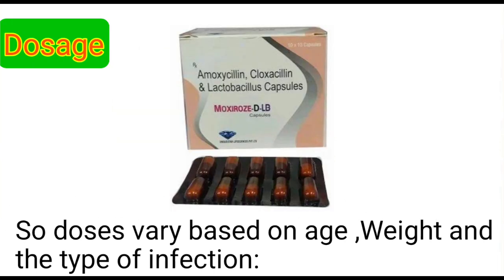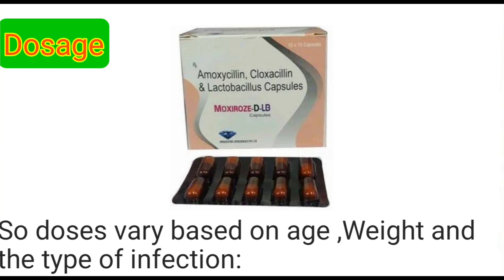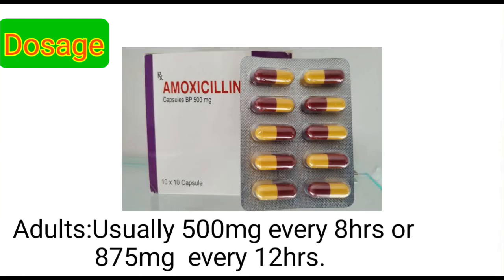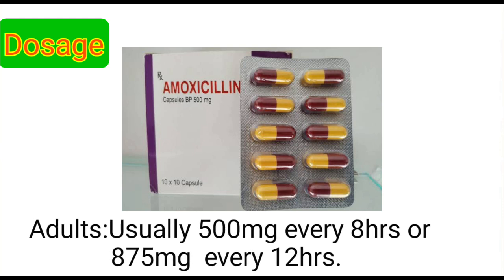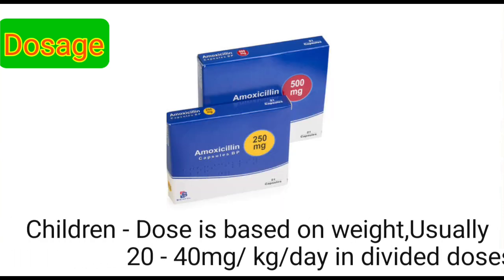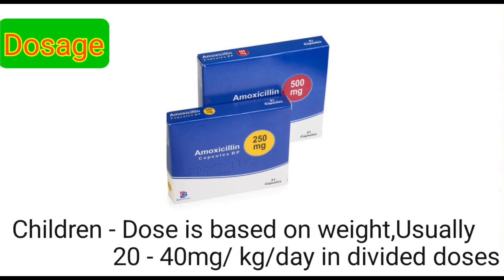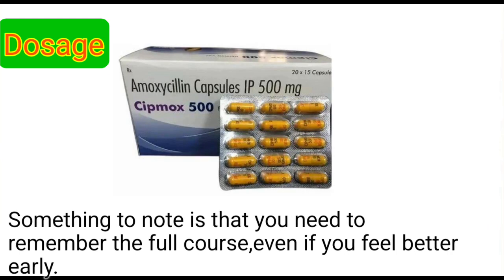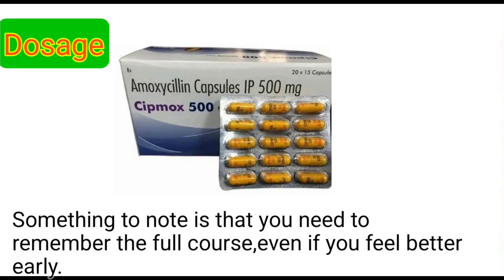Amoxicillin dosage. Doses vary based on age, weight, and the type of infection. In adults, it's usually 500 milligrams every eight hours or 875 milligrams every 12 hours. In children, the dose is based on weight, usually 20 to 40 milligrams per kg per day in divided doses. You need to complete the full course even if you feel better early.